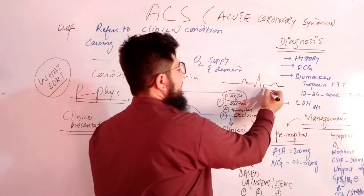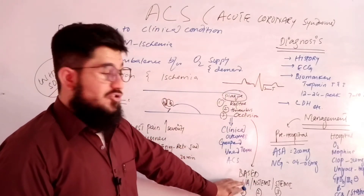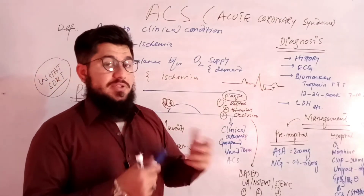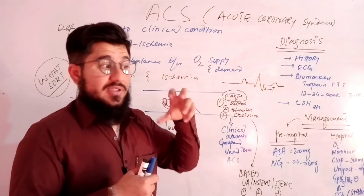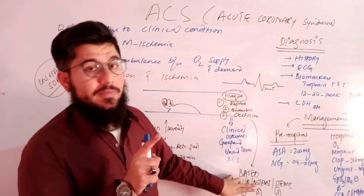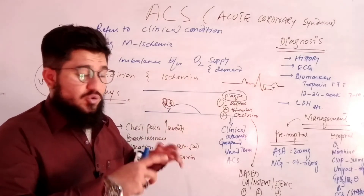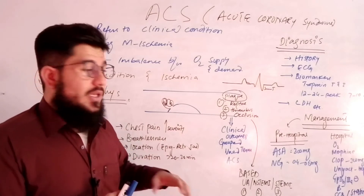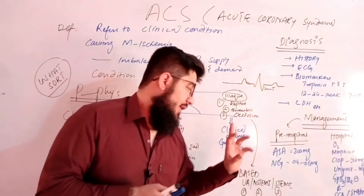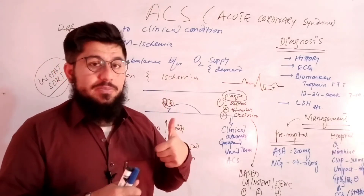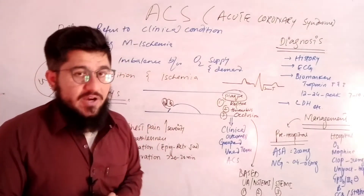The ST segment — from S to T — is the key segment that helps us differentiate between unstable angina, NSTEMI, and STEMI. Unstable angina and NSTEMI show a similar ECG pattern, so they are treated with a similar approach. In unstable angina and NSTEMI, we will see inverted T-waves and depressed ST segments. In STEMI, the ST segment will elongate and be elevated.